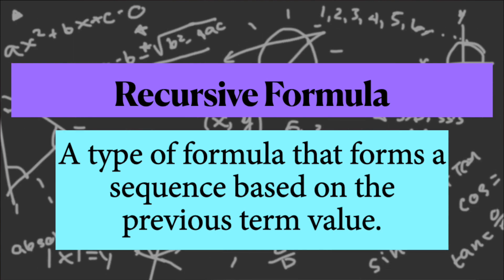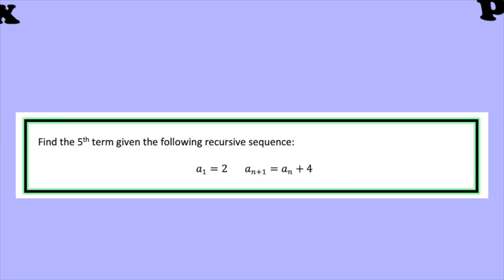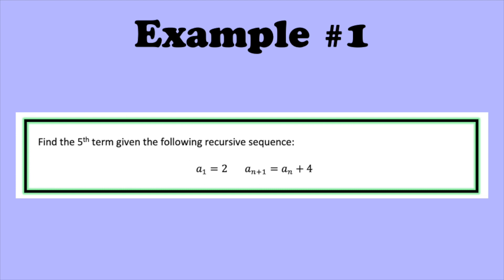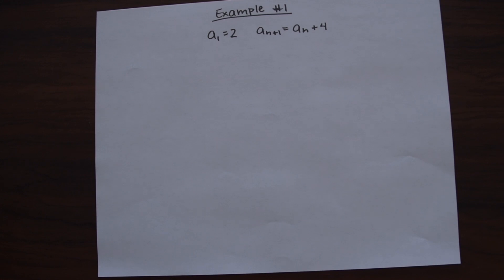For our first example, we need to find the fifth term and we're given two pieces of information. The first part translates to a sub one equals two, and the second part translates to a sub n plus one equals a sub n plus four. Using these two pieces of information we're going to create a sequence, and we need to find the fifth term.